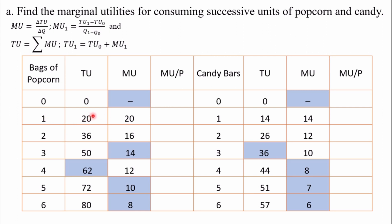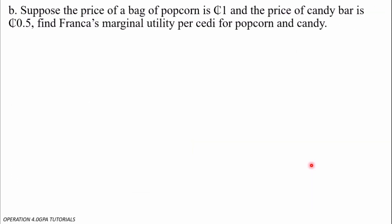Getting the marginal utility for the first consumption is going to be 20 minus 0 over 1 minus 0, which gives us 20. The same applies to all of them to fill the entire marginal utility column. For total utility, the previous one is 50 plus 12 equals 62; and 20 plus 16 gives 36; 20 plus 16 plus 14 gives 50, and so on. The same approach is used to derive the marginal utility for candy bars.